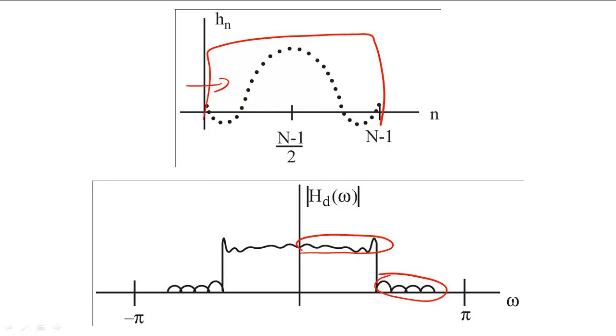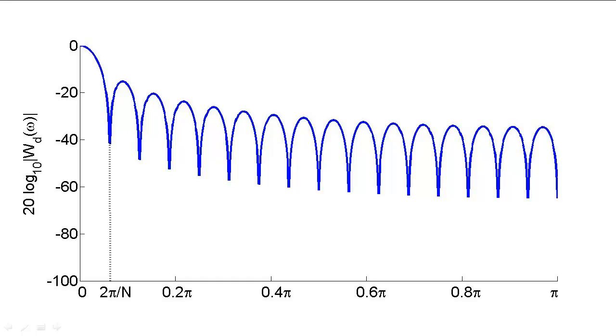If we take a closer look at this system, we see that the width of the main lobe is 2π over capital N, and that the height of the first side lobe is 13 decibels smaller than the main lobe.